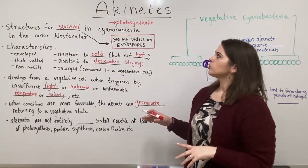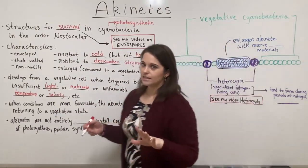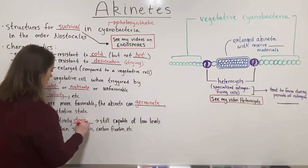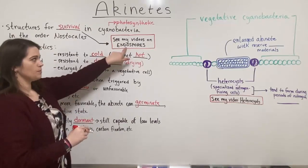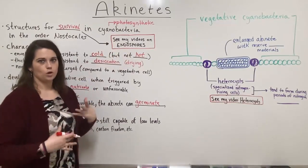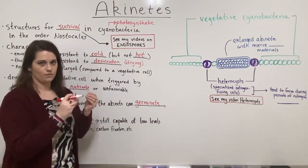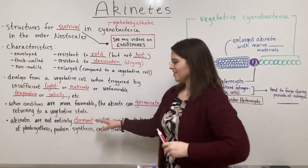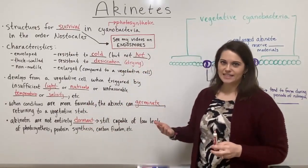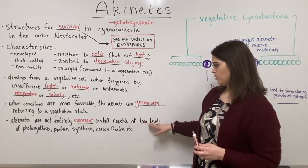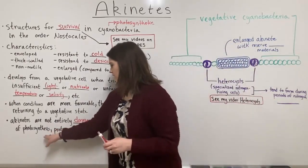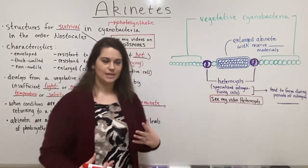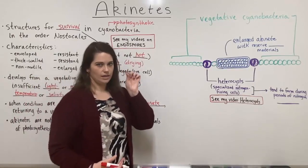It's important to realize that akinetes are not entirely dormant. Endospores basically are — they're dormant structures in a holding pattern, just waiting for conditions to become more favorable. But with akinetes, there's still a low level of activity going on inside. They're still capable of low levels of photosynthesis, protein synthesis, carbon fixation, and some other major metabolic processes — they can still do a little of these.